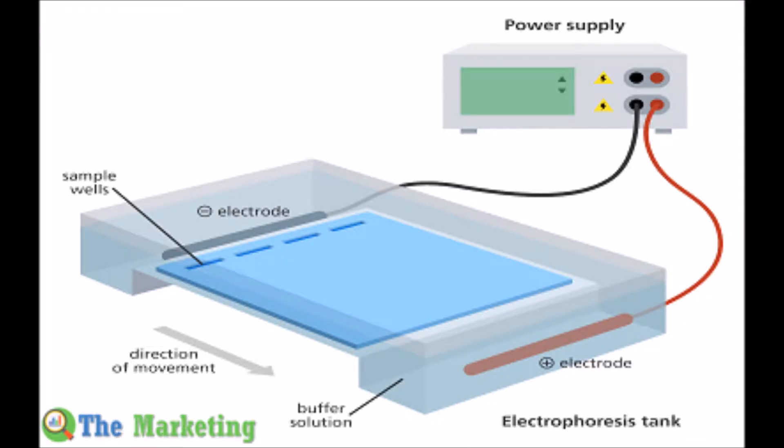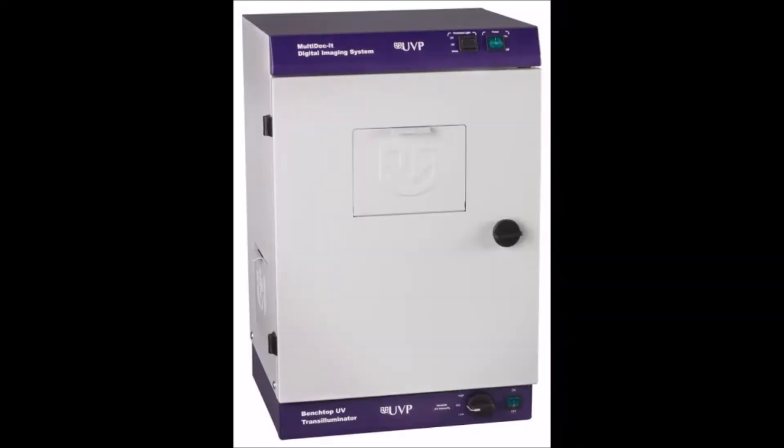The gel was electrophoresed at 100 volts for 10 minutes. After the samples ran in the gel, they were placed in the transilluminator, and pictures were taken to visualize them.